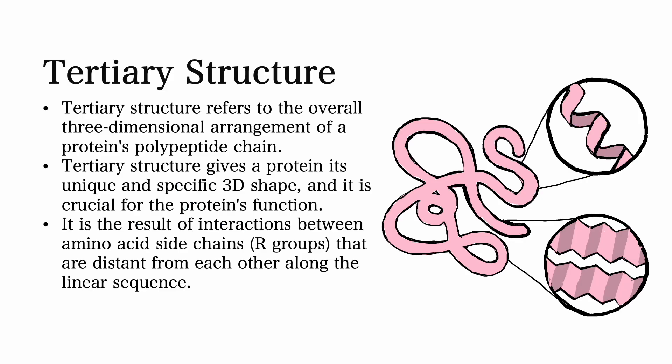Tertiary structures refer to the overall three-dimensional arrangement of the protein's polypeptide chain. Tertiary structures give a protein its unique and specific 3D shape, and it is crucial for the protein's function.